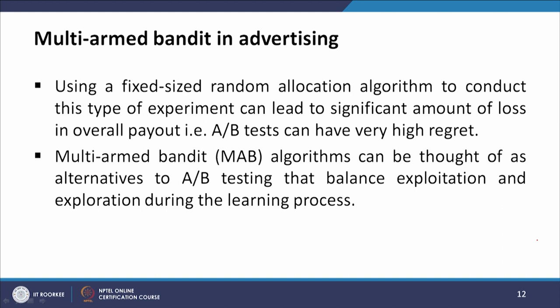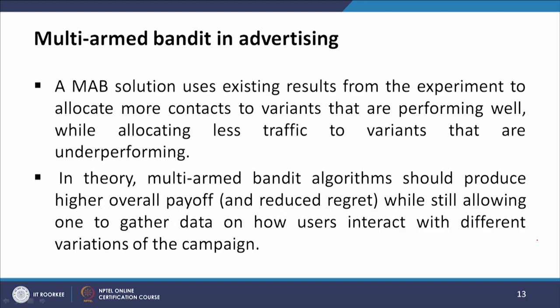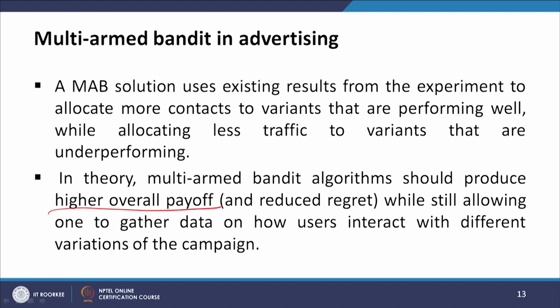The multi-armed bandit algorithm can be thought of as an alternative to A-B testing that balances exploration and exploitation during the learning process. A multi-armed bandit solution uses existing results from an experiment to allocate more contacts to variants that are performing well while allocating less traffic to underperforming variants. In theory, multi-armed bandit algorithms could produce higher overall payoff and reduced regret while still allowing one to gather data on how users interact with different variations of the campaign.